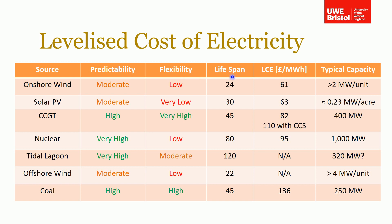You also need to consider lifespan — how long you're going to have that energy source available — and typical capacity. In terms of predictability, all the sources that rely on wind and solar you'd rate as moderate; you can't rely on them in a meaningful way. Whereas for fossil fuels and nuclear, as long as you've got the fuel available you can burn it and get power out. Even the tidal lagoon has very high predictability because we can predict the tides very accurately.